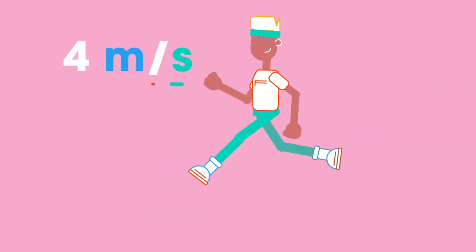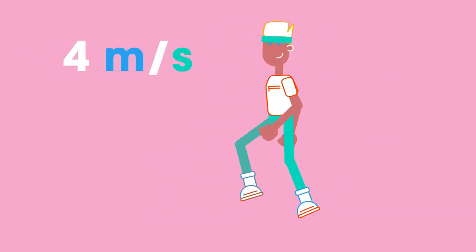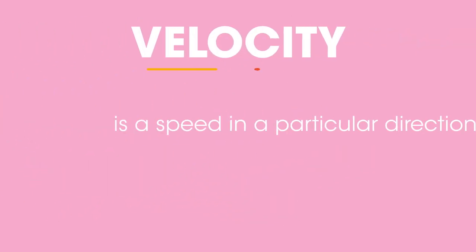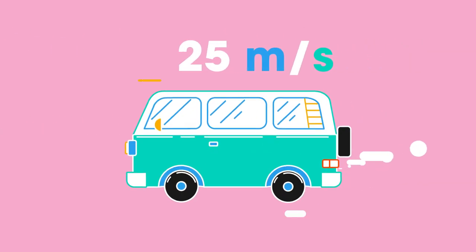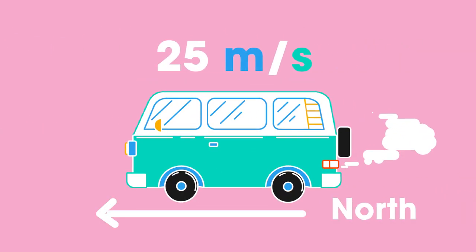Velocity is a speed in a particular direction. For example, a van traveling north at 25 meters per second and a raindrop moving down at 1 meter per second.